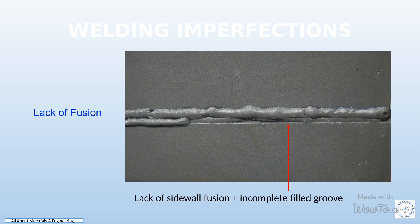In a pictorial representation, lack of fusion may be depicted by showing a visible gap or line between the base metal and the weld metal, symbolizing the incomplete fusion between the two materials.